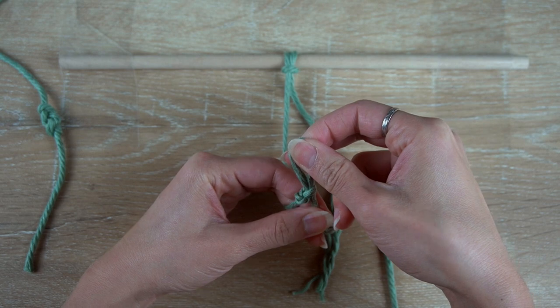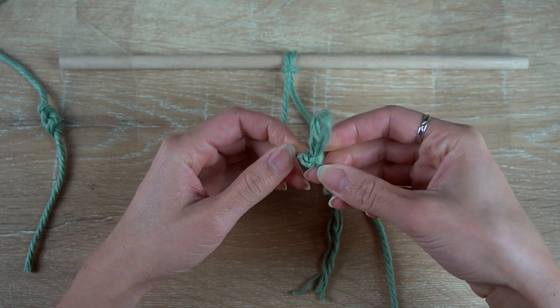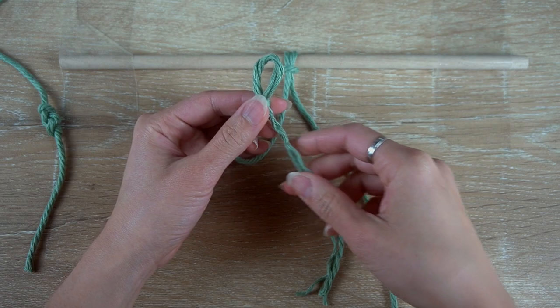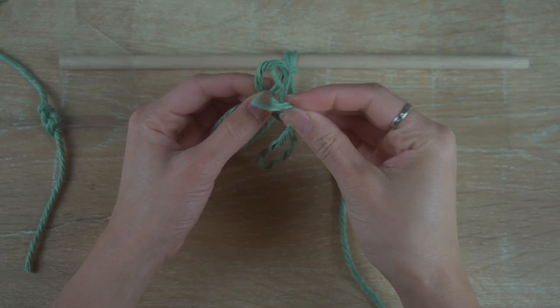Then weave it through the top loop. Then pull on the top end of the cord to tighten the knot. Take the bottom end and weave it through the loop from front to back.